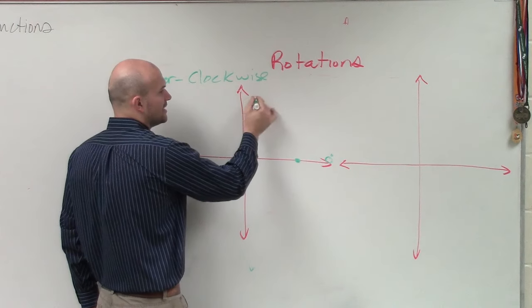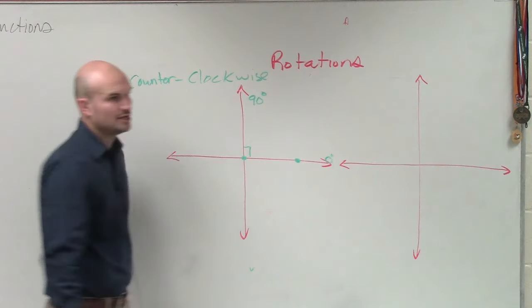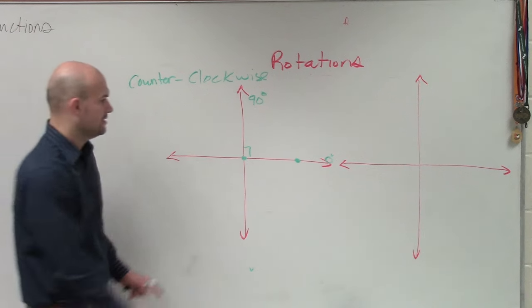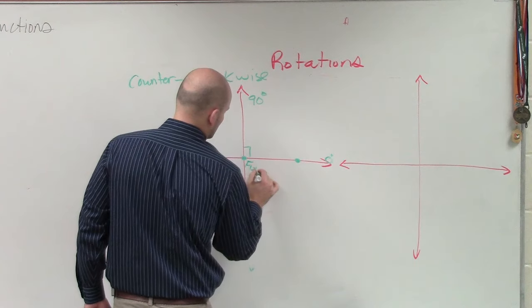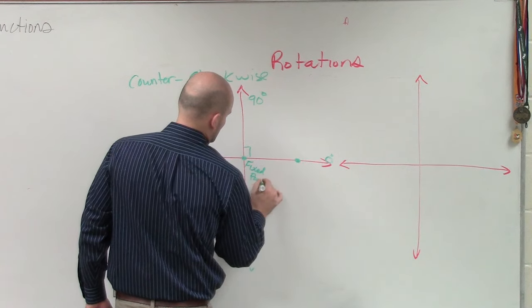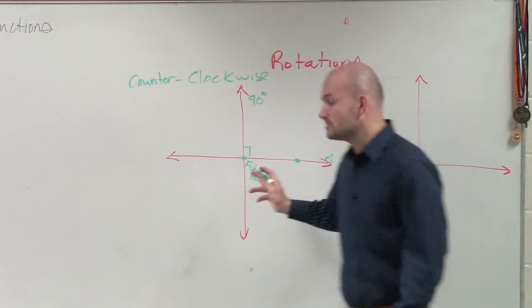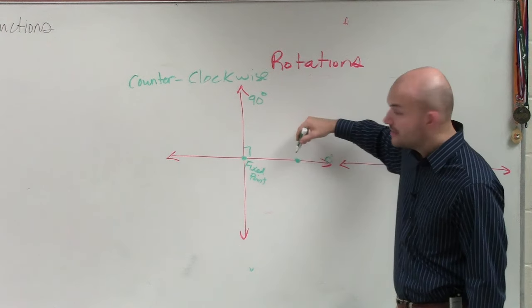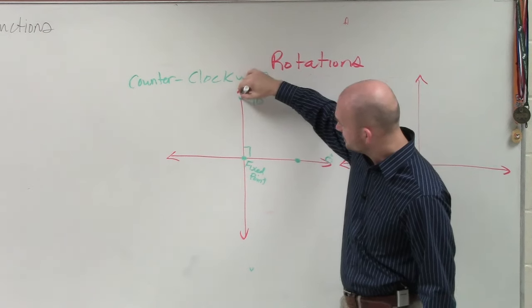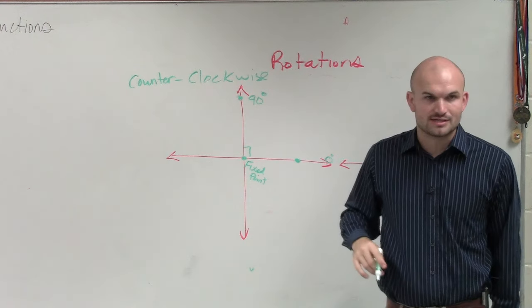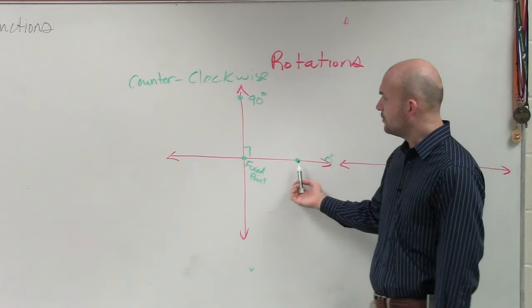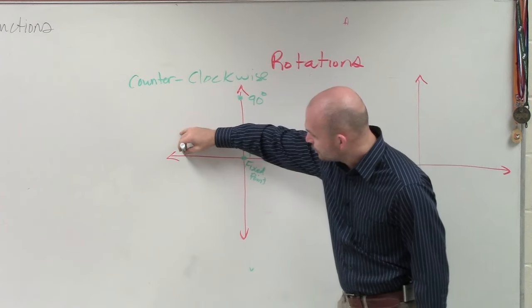So from here to here would be 90 degrees. So if here was my fixed point, this is the point I'm going to rotate on. And if I had a point on this line, if I rotate it from here to here, that would be 90 degrees.